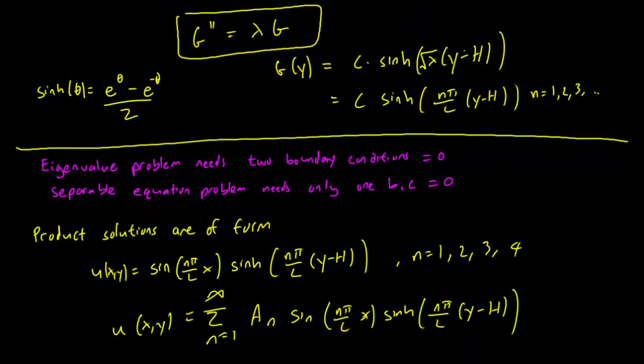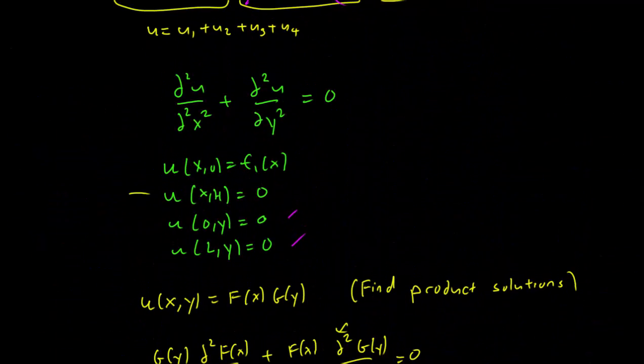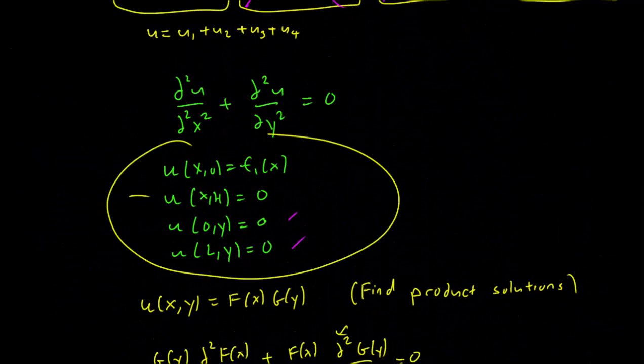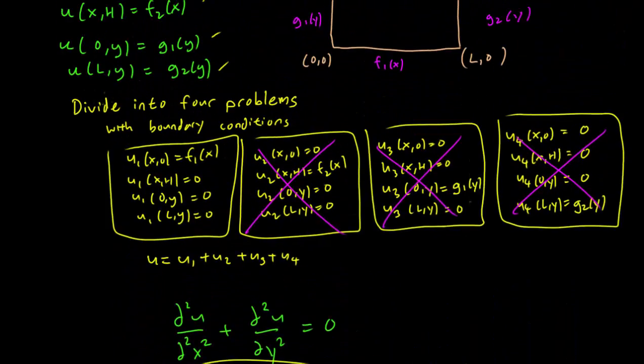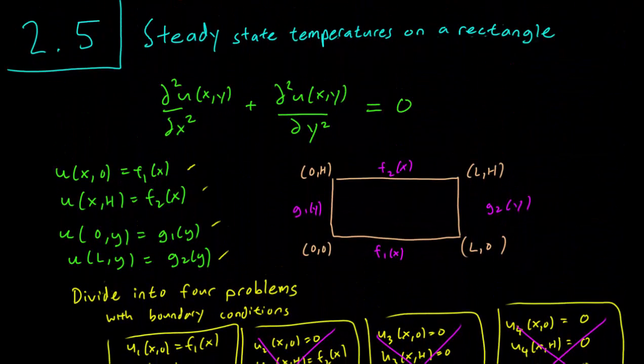And therefore, our solution must be of this form: u(x,y) equals the infinite sum of a_n sin(n pi over l times x) times sinh(n pi over l times (y minus h)), going from 1 to infinity. I want to emphasize that this is a solution for this boundary condition, the one where you have three of the boundary values set to 0.